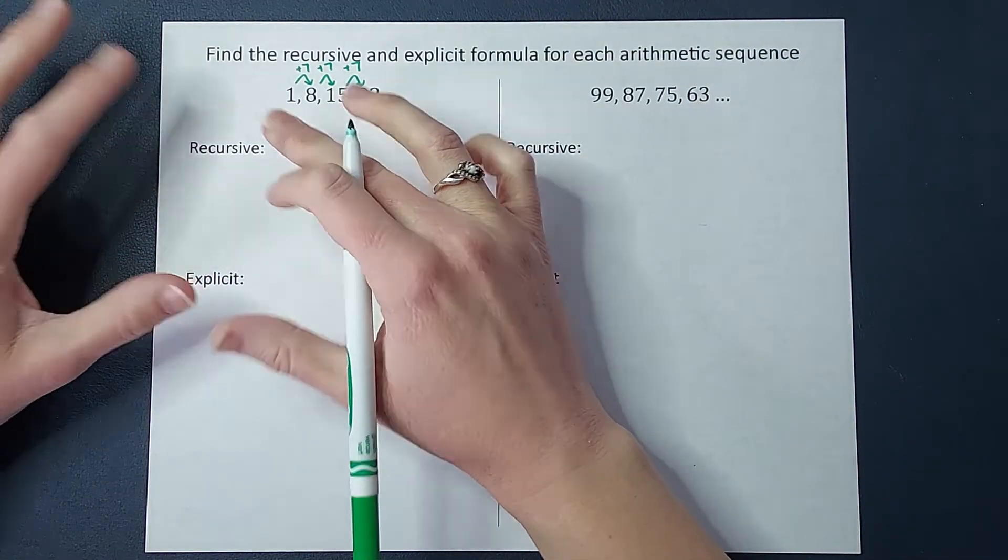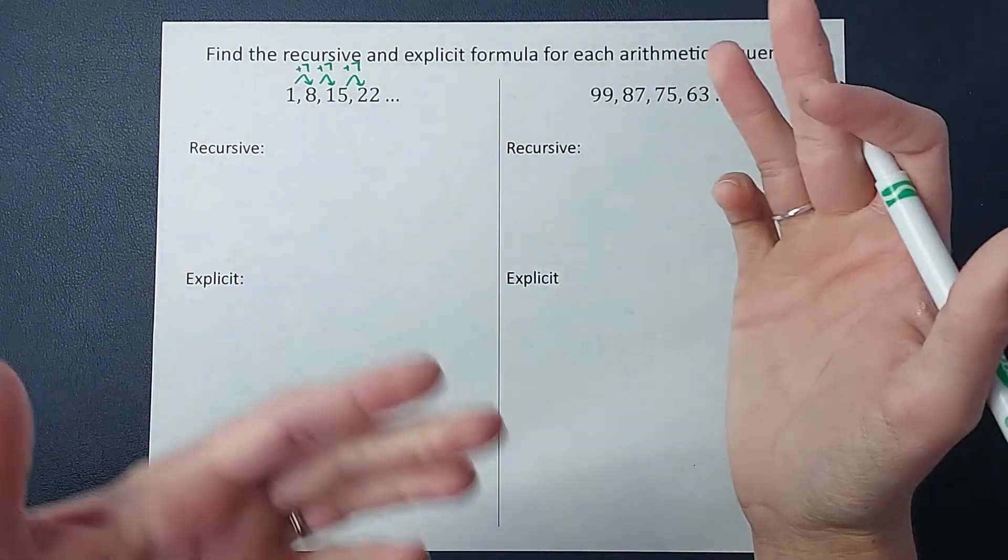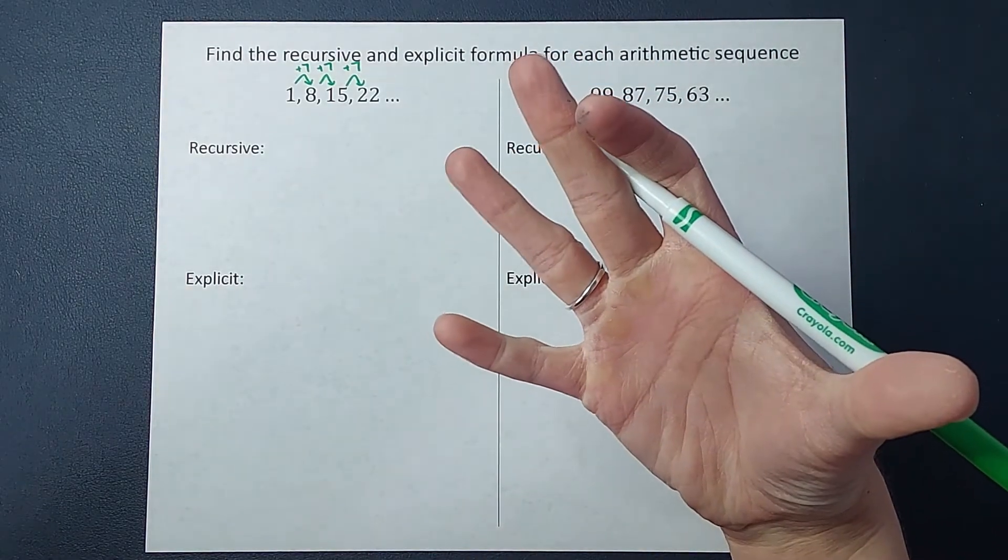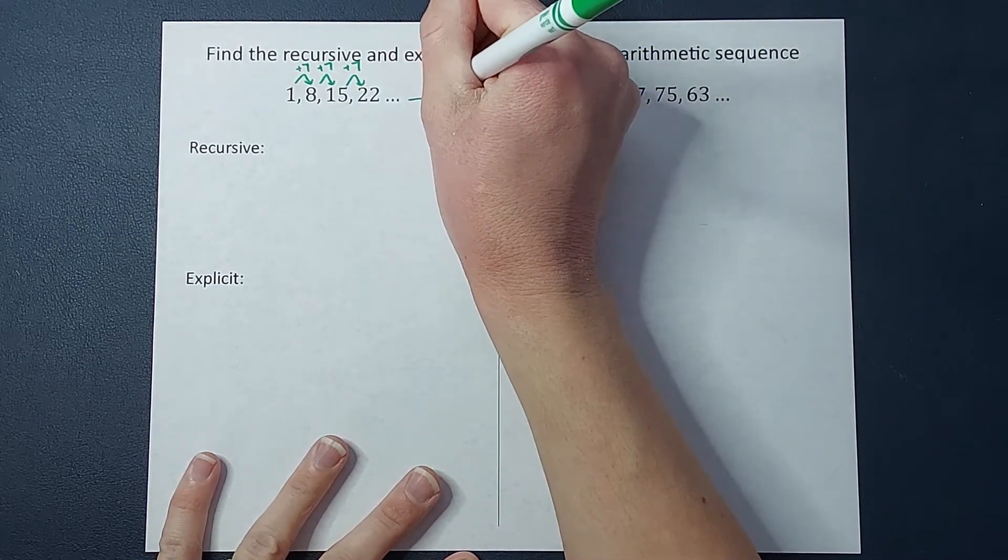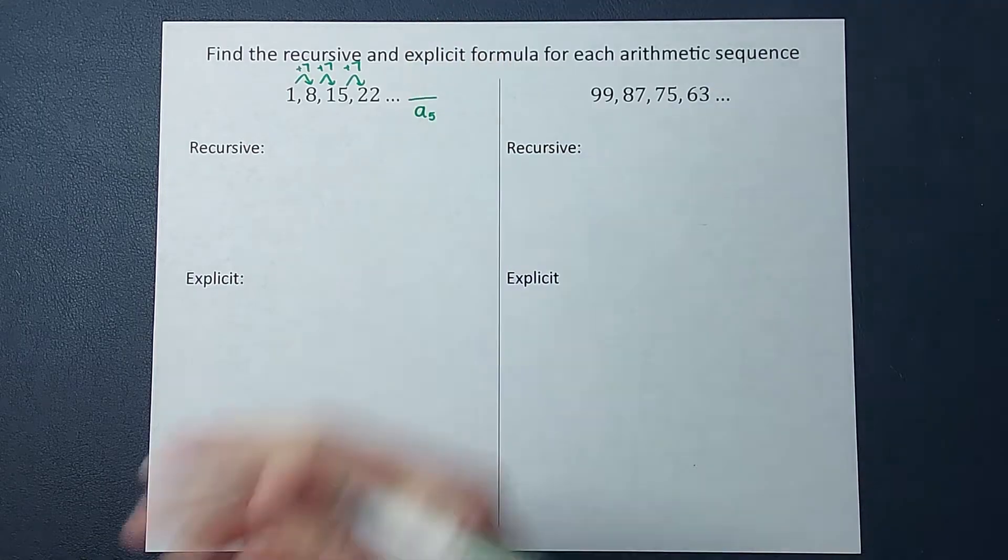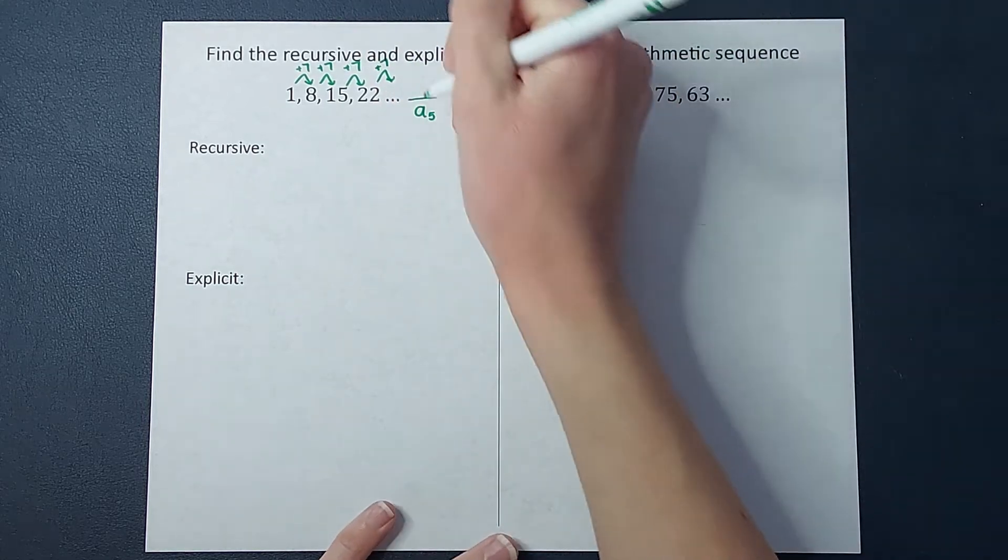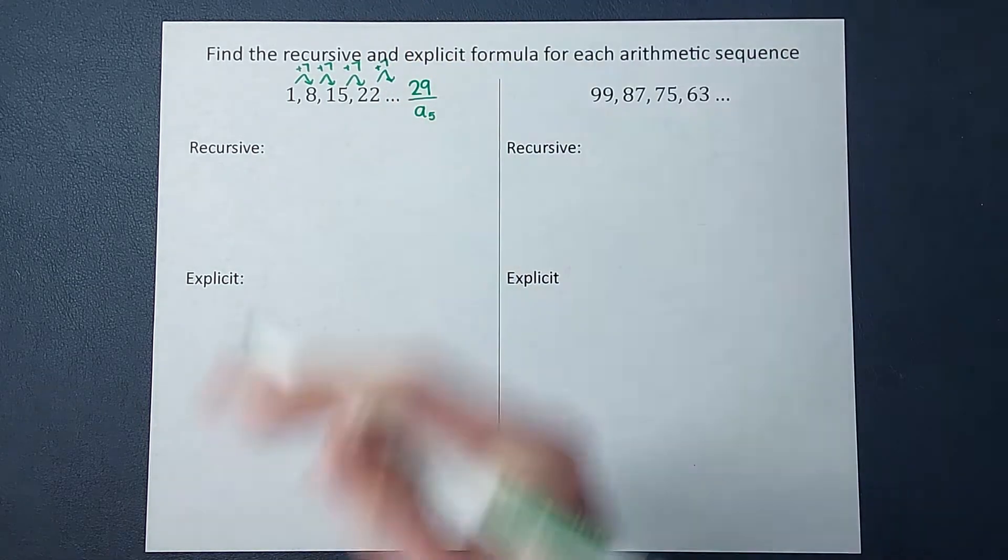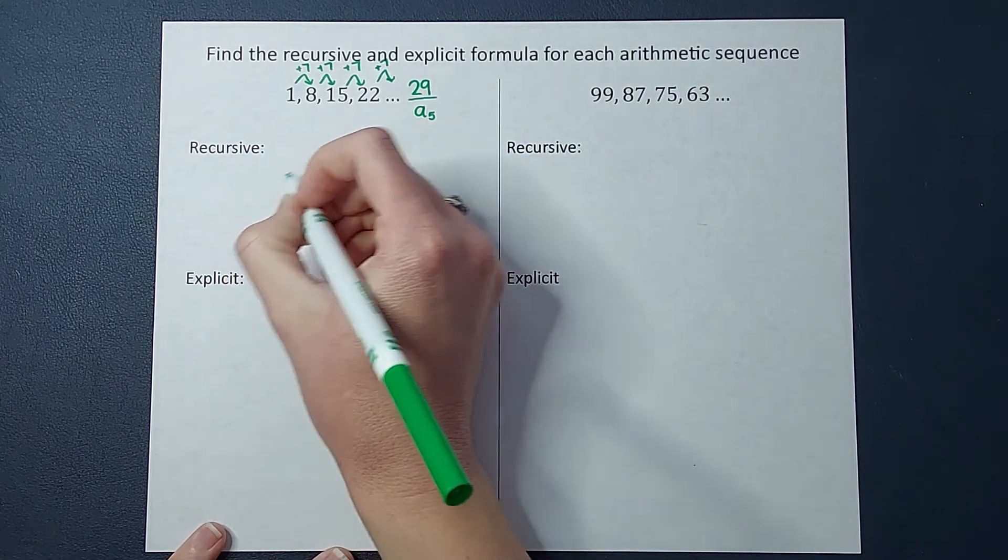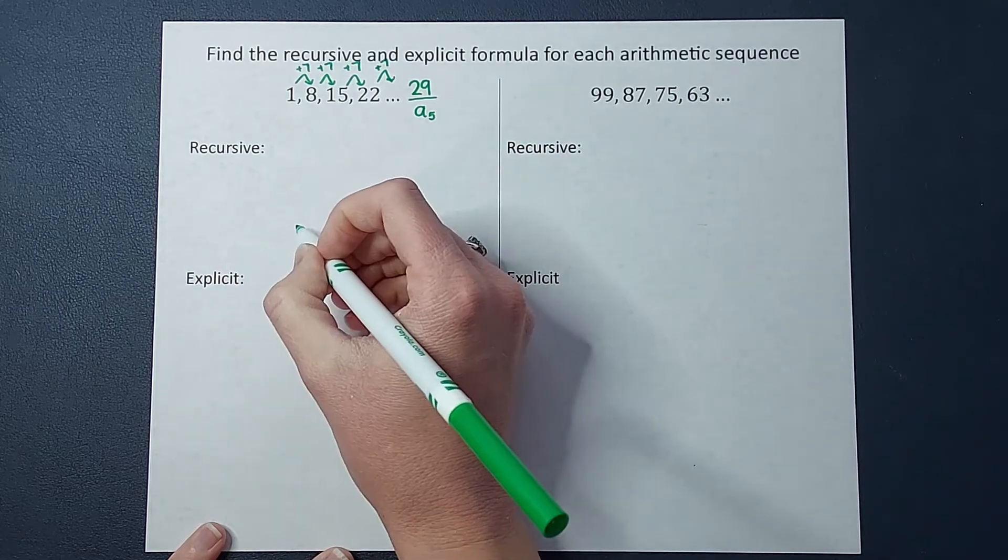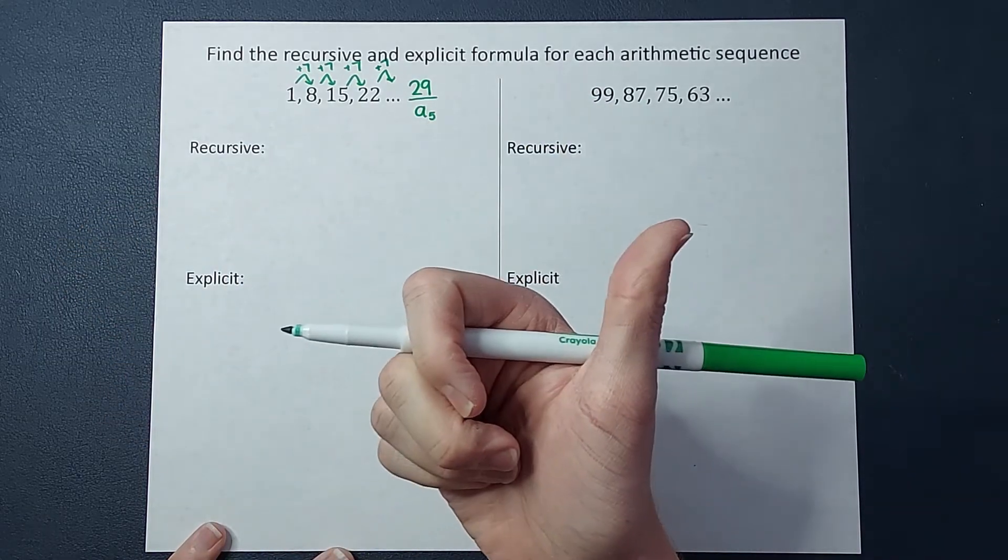We'll talk about the difference between these as we go. So my recursive formula, basically, if we were in an English class, if I was looking for the next term here, the a sub five, what would I do? Well, I would just add seven again, and I would end up with 29. So if I were in an English class, I could just write in my beautiful handwriting, to find the next term in your sequence, take the one before and add seven. Your English teacher would be like A plus, thank you. You're done.